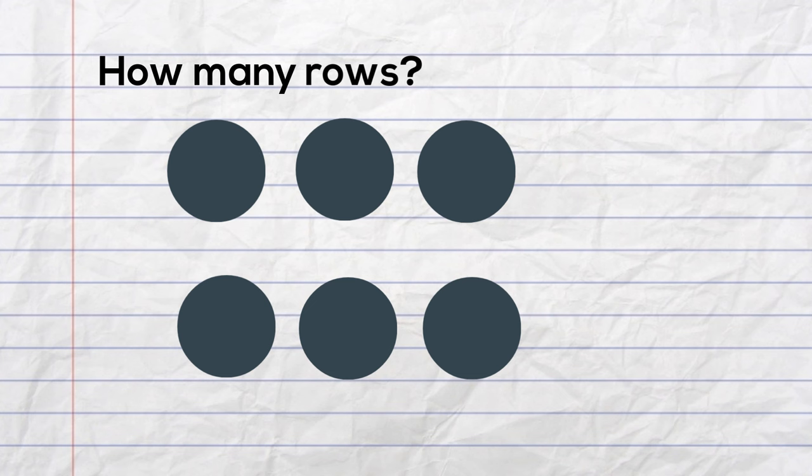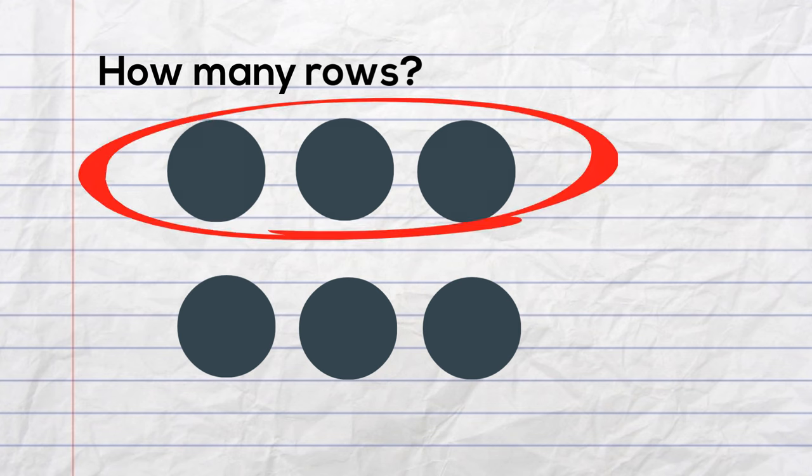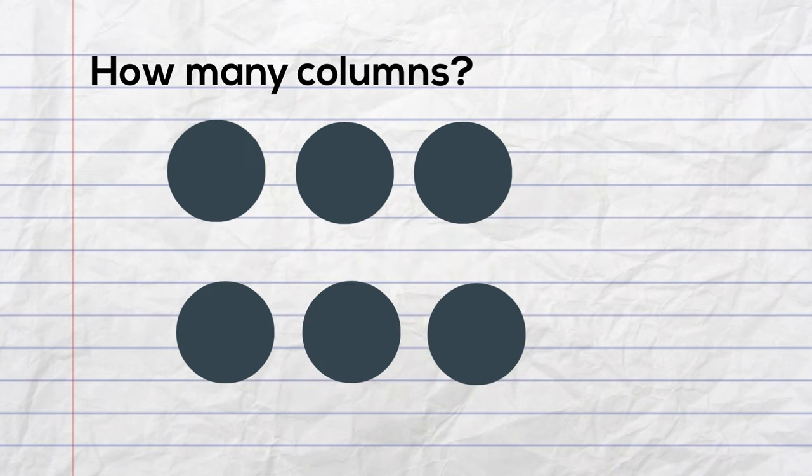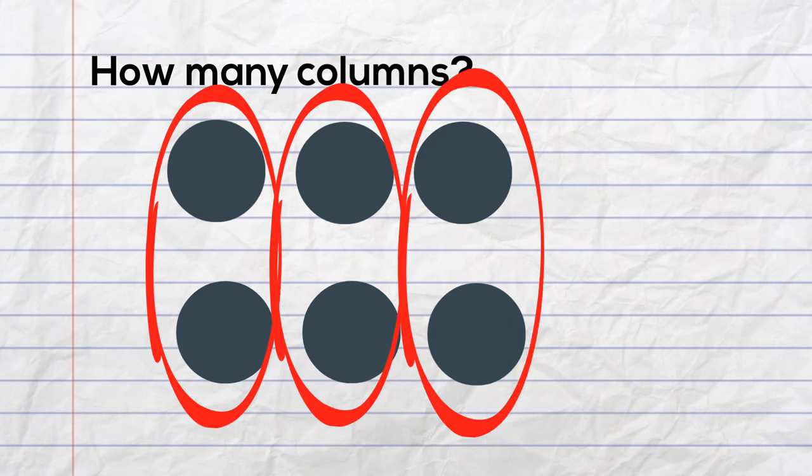OK, let's look at this array. How many rows are there? Well, there are one, two horizontal rows. Next, how many columns are there? There are three columns. One, two, three.